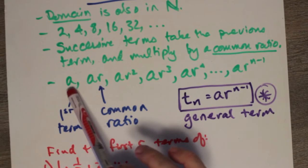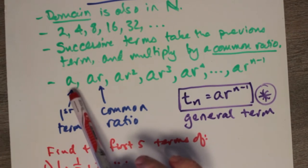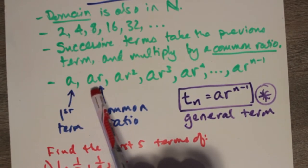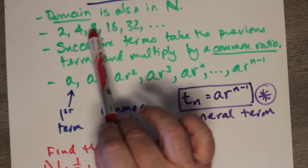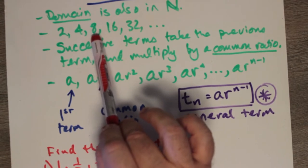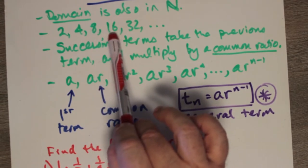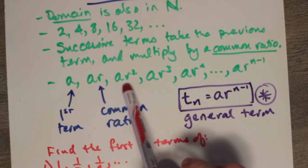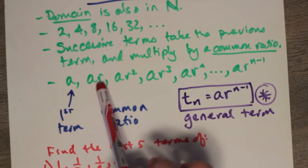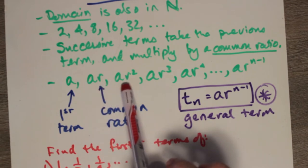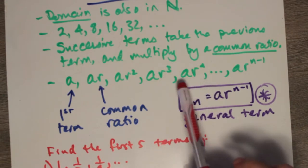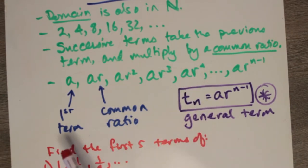In general terms, if the first term is a — just like it was for the arithmetic sequence — then the next term is a times r. So as in 2, then this must be 2 times 2, and this must be 2 times 2 squared, which is 2 times 4. And this is 2 times 2 cubed, or 2 times 8. So r is the common ratio, and every time ar gets multiplied by r to make ar squared, ar squared gets multiplied by r to make ar cubed.